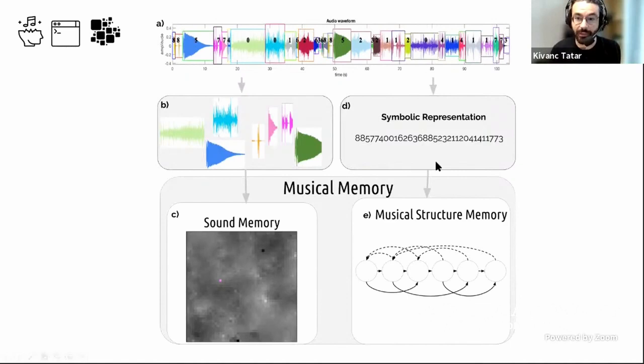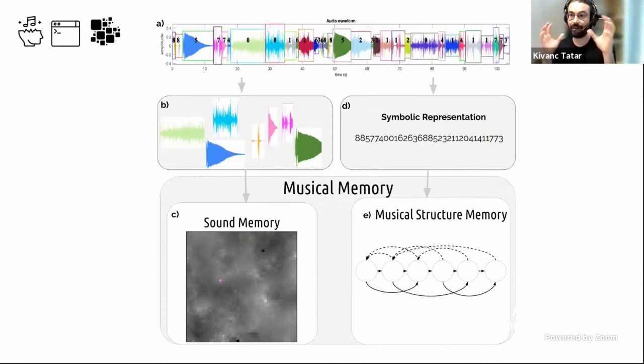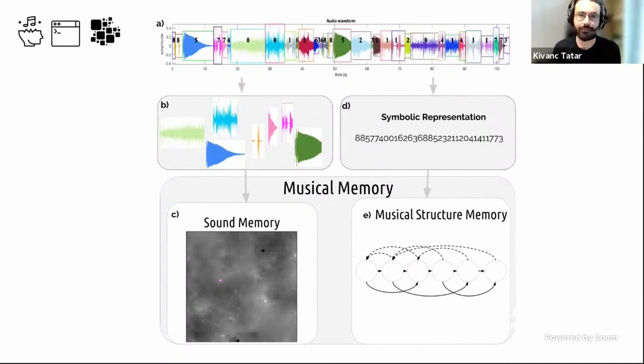What we have here is the organization in time. Once you have this representation, you can use different statistical sequence generation algorithms — more like compression algorithms. When you make a zip file, you use some of those algorithms. They understand patterns and compress your data to a smaller size. Those compression algorithms try to find patterns within a string. I use them for music because I needed to understand patterns in a string of numbers. This is the main idea of MASOM.